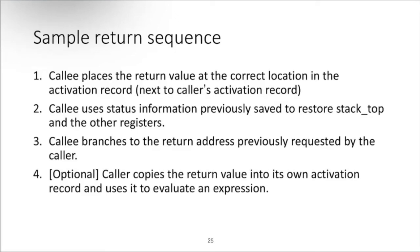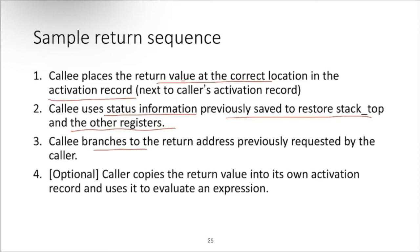In the return sequence: the callee places the return value at the correct location in the activation record so the caller can find it; the callee uses previously saved status information to restore the stack top and other registers; the callee branches to the return address previously recorded by the caller. Optionally, the caller copies the return value into its own activation record and uses it to evaluate an expression.